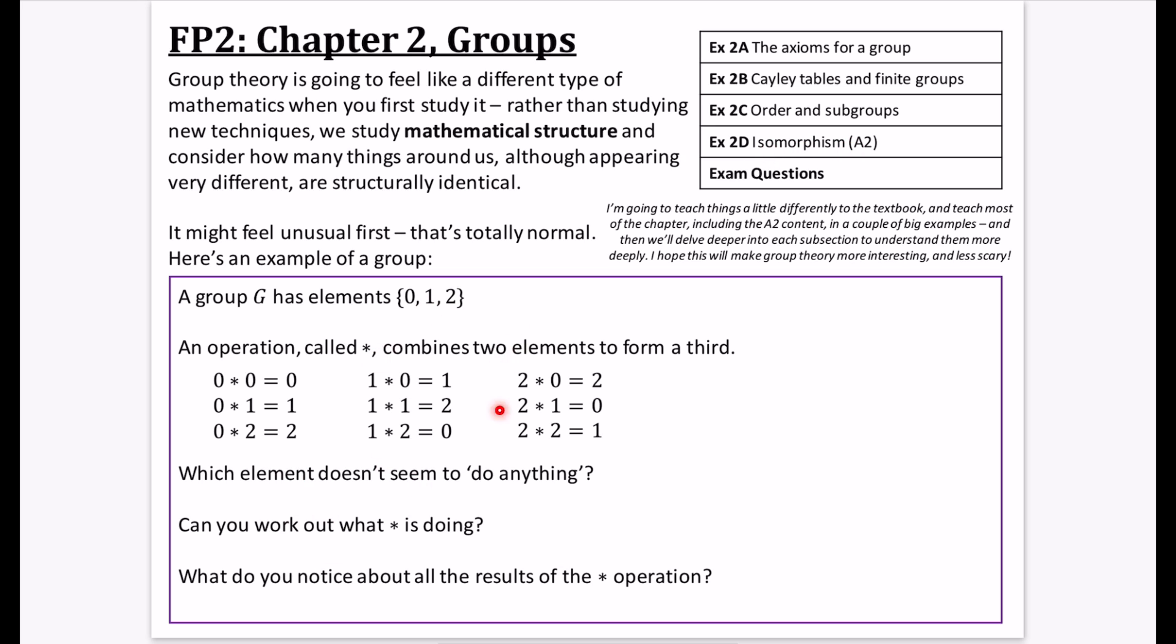So here I have got an example of a group. And inside this group, we have different elements. Elements are basically members of a group, a bit like members of a set. And actually, this is a set of numbers that we have here. And the set of the elements are 0, 1 and 2. Now, it's not just a set, it's a group. And a group is different to a set because it fulfills certain particular properties.